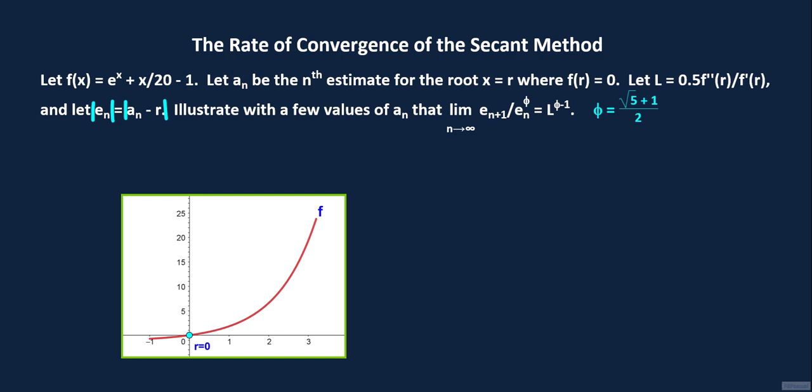After finding the first few values of e sub n, we find the first few terms of the sequence whose terms are given by e sub n plus 1 divided by e sub n raised to the phi-th power. Then, we compare these terms to the value of l raised to the phi-th power where l equals 0.5 times f double prime of r divided by f prime of r or 0.5 f double prime of 0 divided by f prime of 0.